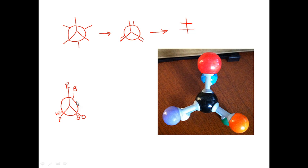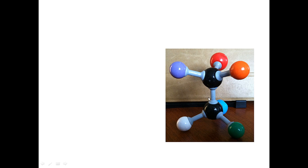What I need to do is imagine myself looking straight down the front carbon and back carbon bond — right about here in this picture — looking down the carbon-carbon bond. So if you can imagine yourself looking at the molecule like that, looking at it sort of sideways, this is what you would see: the Fischer projection of that molecule.